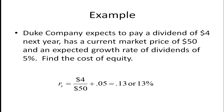Let's take a look at an example. Suppose Duke Company expects to pay a dividend of $4 next year, has a current market price of $50, and an expected growth rate of dividends of 5%. To find the cost of equity, we take next period's dividend divided by the current market price, plus the growth rate of dividends of 5%, and it turns out to be 13%.